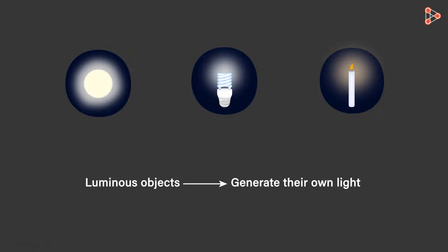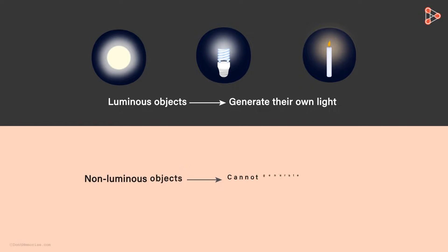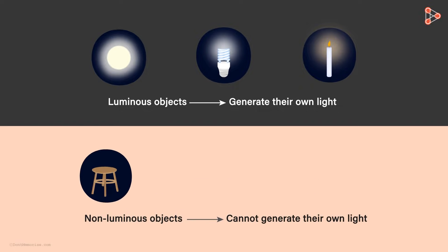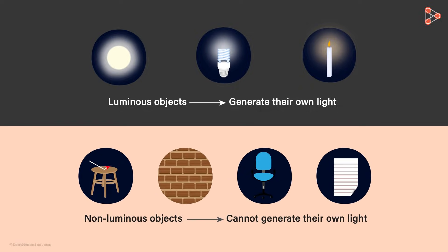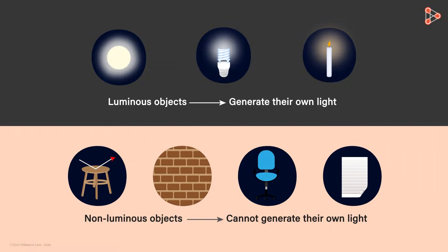Many objects around us are non-luminous, that is, they cannot generate their own light. However, these objects reflect the light from the luminous objects from their surfaces. And because of this reflection, we can see such objects.